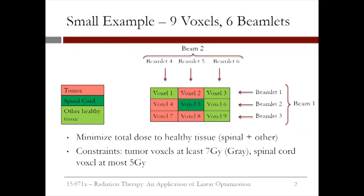We'll start with a small example. Suppose we have nine voxels and six beamlets. Our voxels can be categorized into three types: the tumor voxels, colored pink; the spinal cord voxel, colored dark green; and other healthy tissue voxels, colored light green. So we have four tumor voxels, one spinal cord voxel, and four other healthy tissue voxels.